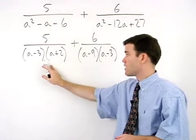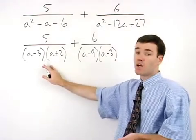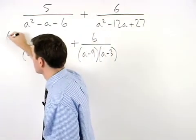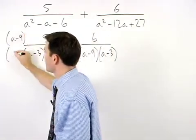Since our first denominator is missing the a minus 9, we multiply top and bottom of the first fraction by a minus 9.